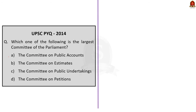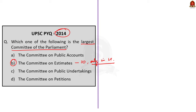The second question is a previous year question asked in 2014: which one of the following is the largest committee of the parliament? Out of the four options given, the committee on estimates (Estimates Committee) is the largest committee of the parliament because it has a total membership of 30 members. Moreover, all members are from the Lok Sabha — Rajya Sabha has no representation in this committee. So the correct option is option B: Committee on Estimates.